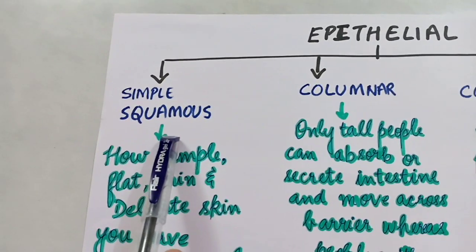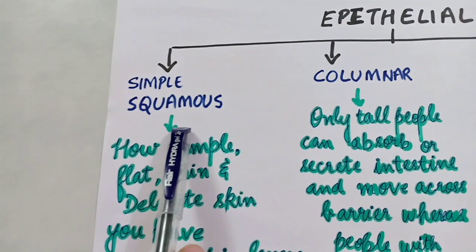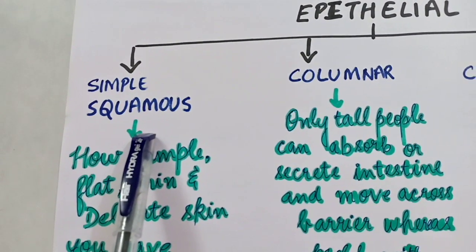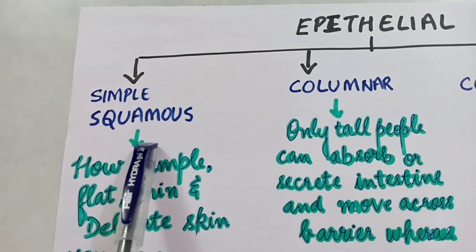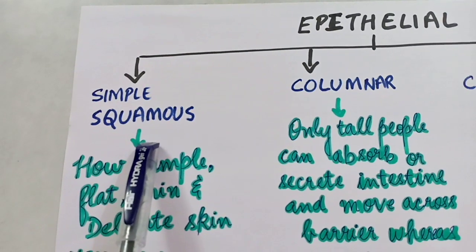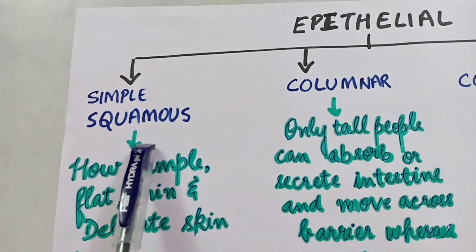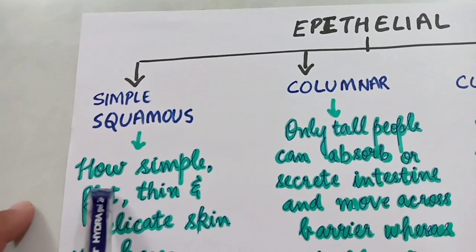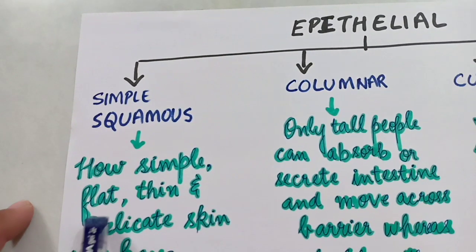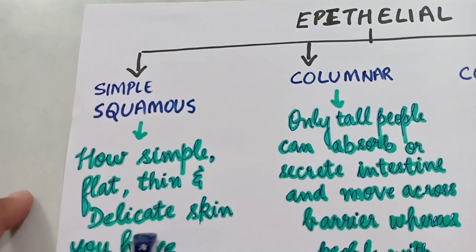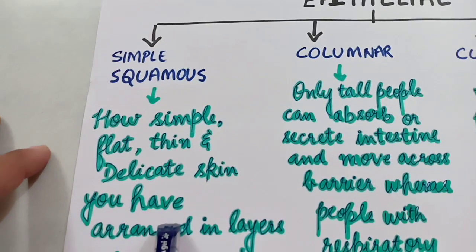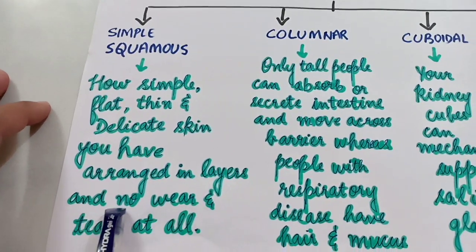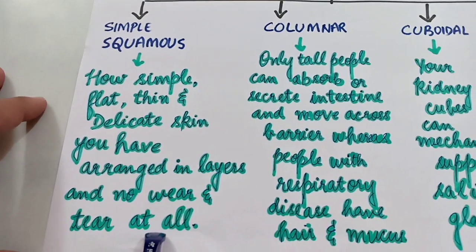The simple trick to learn the basic characteristics of simple squamous epithelial tissue is to remember one sentence: 'How simple, flat, thin and delicate skin you have arranged in layers, and no wear and tear at all.'